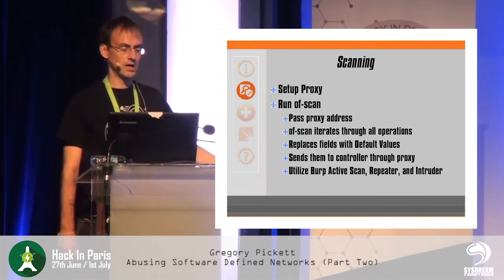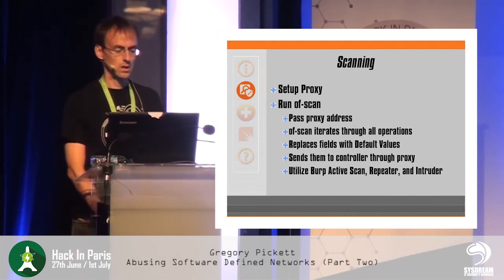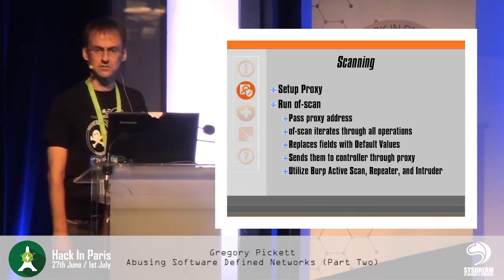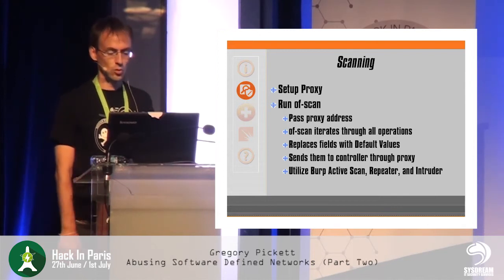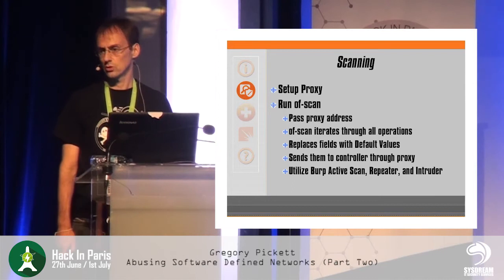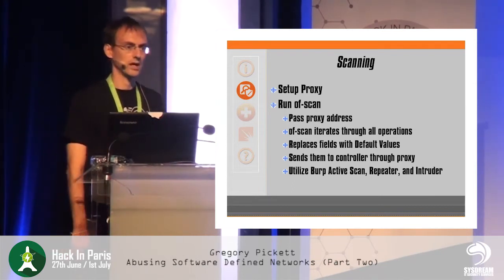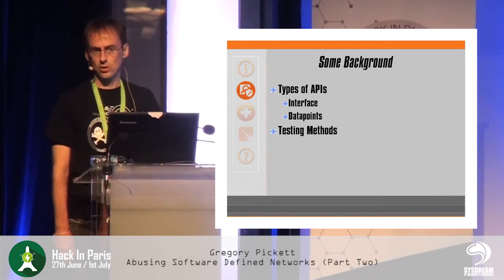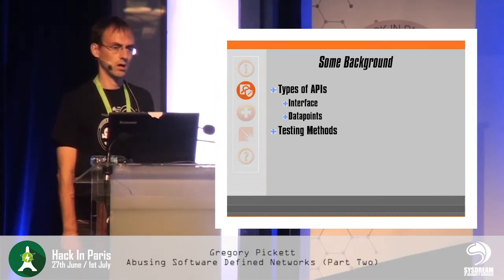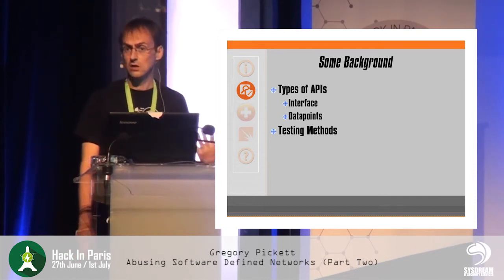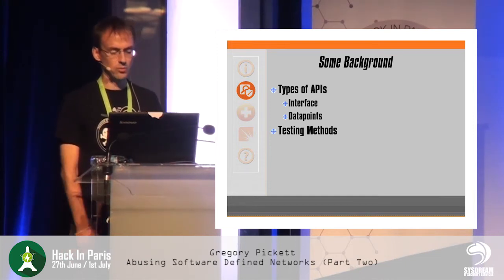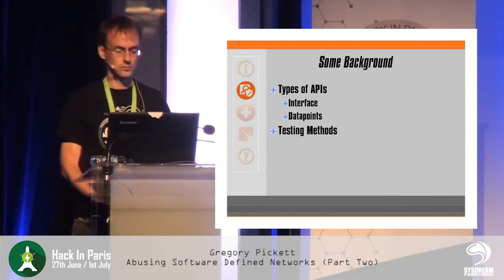With scanning, you set up your proxy and run of_scan, passing it the proxy address. Of_scan will then iterate through all the different operations defined in the configuration file for the controller. Like most templating, it replaces fields with default values, sends them to the controller through the proxy, and then you can utilize Burp's active scan, repeater, and intruder to do all the neat AppSec stuff — to play with that controller, to poke at it, to get it to break. To give you an idea of what we're dealing with, let's talk about the different controllers and how they're structuring and receiving their data through their APIs, covering different interfaces, data points, and testing methods.